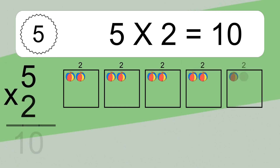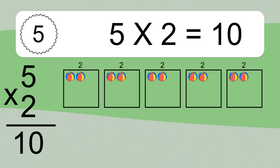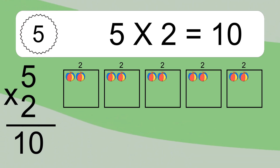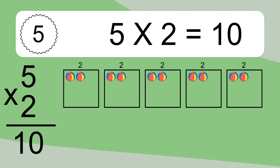5 times 2 equals what? 5 times 2 equals 10. We have 5 boxes, and each box has 2 colorful balls inside. If you count all the balls in all the boxes together, you will have 5 times 2 balls. This equals 10 balls.